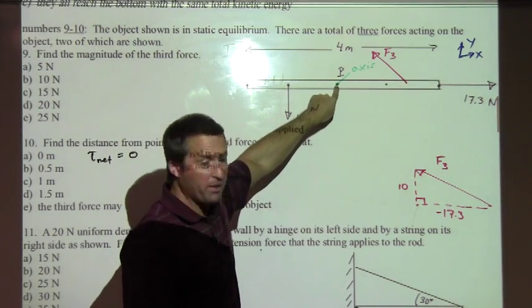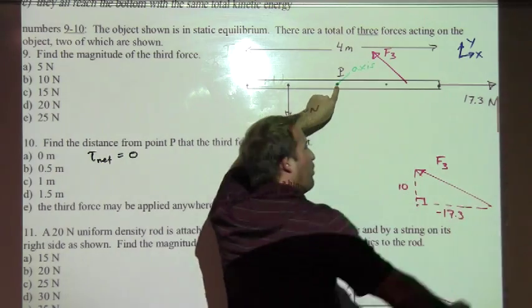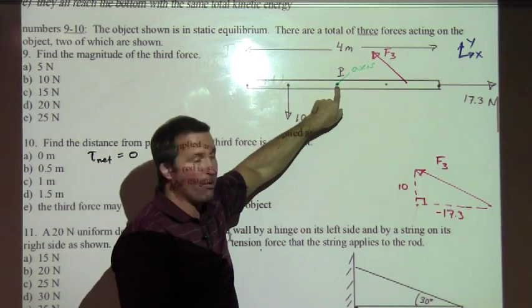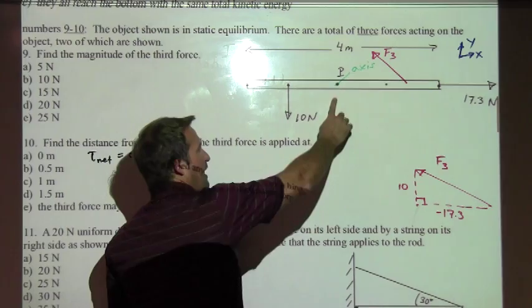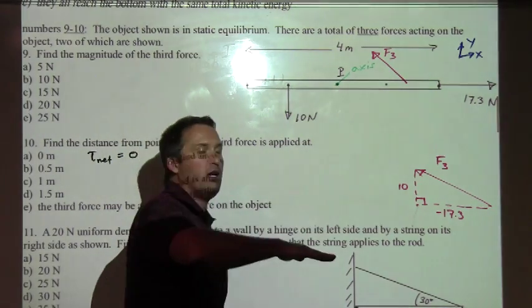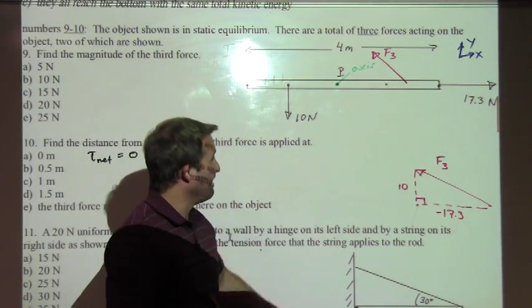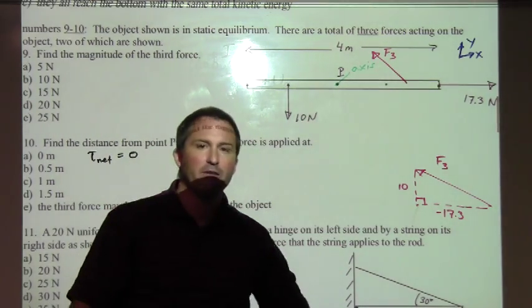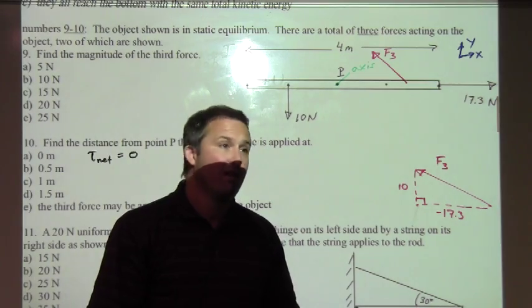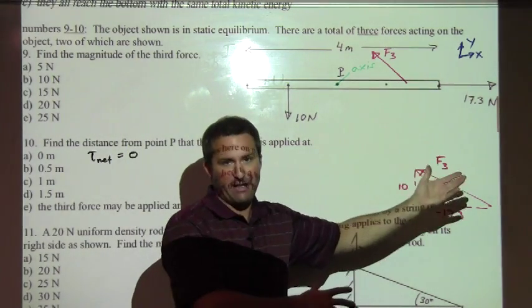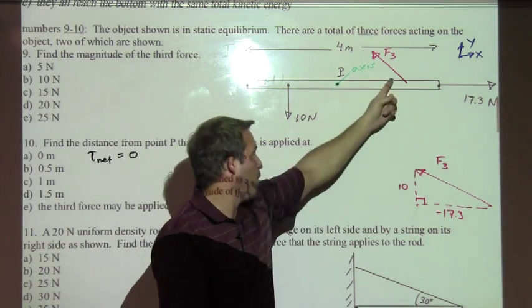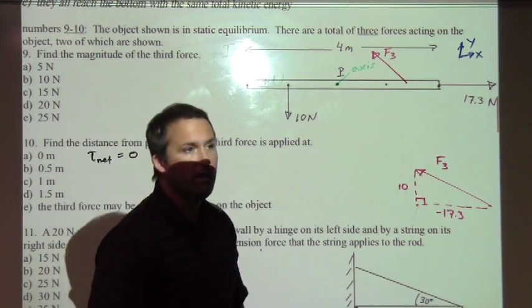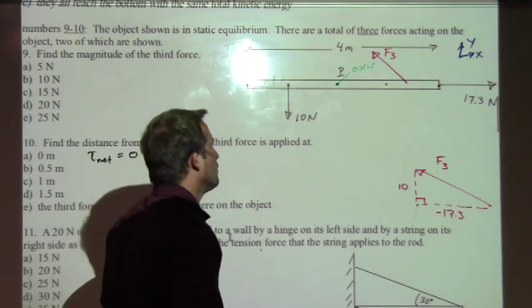I'm going to hold point P fixed. If I pull on the 17.3 Newton force, that's not going to cause the object to rotate at all. It doesn't create any torque about point P. Similarly, if I held the axis point fixed and pulled down on the 10 Newton force, I would see the object rotate counterclockwise. If my force three arrow was over here and I held that point fixed and pulled, that would also tend to make it rotate counterclockwise. We can make the argument that force three can't be on the right side of point P. Anywhere I put it over here, both of these forces are causing torques trying to rotate the object counterclockwise.